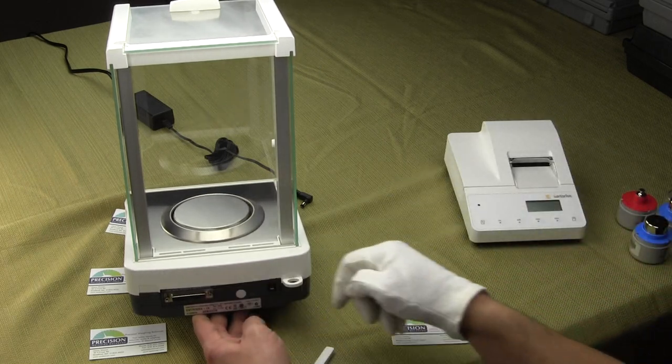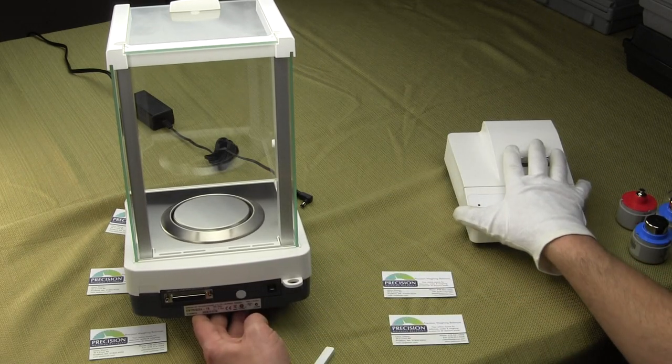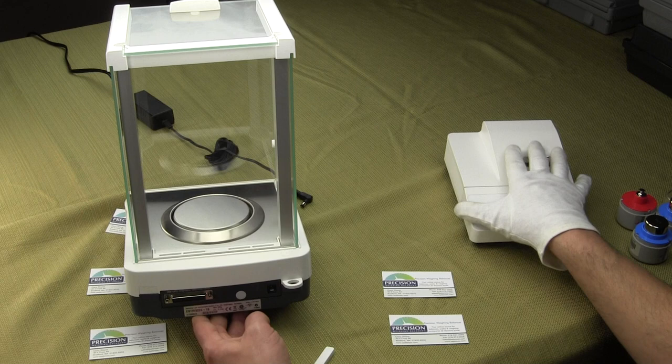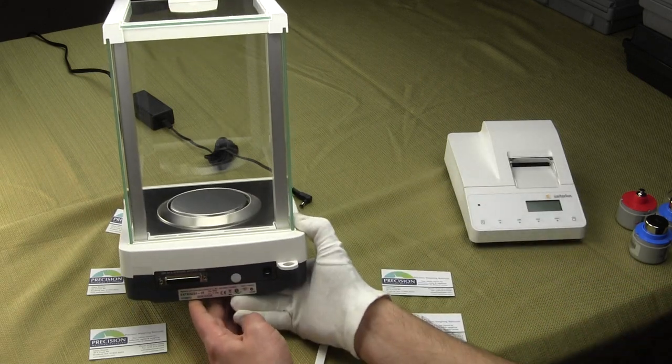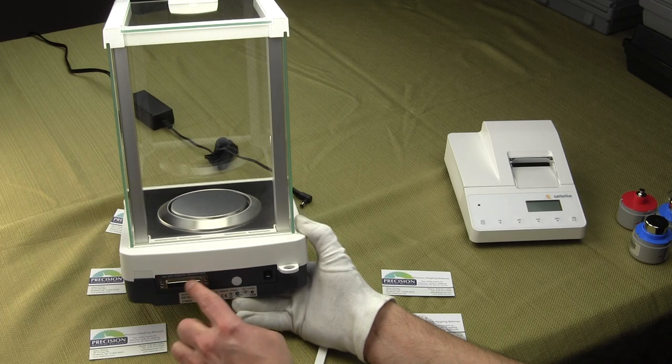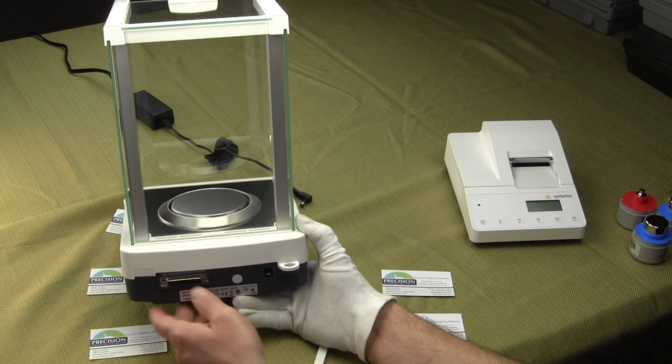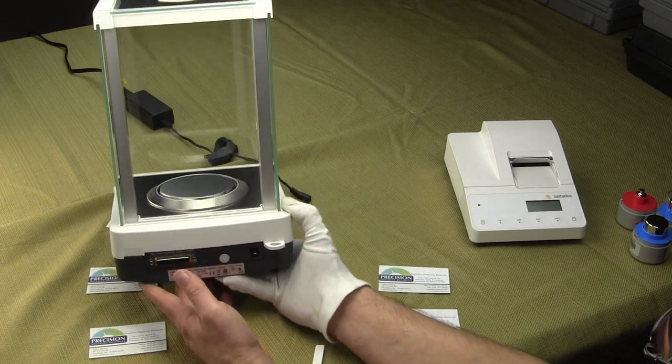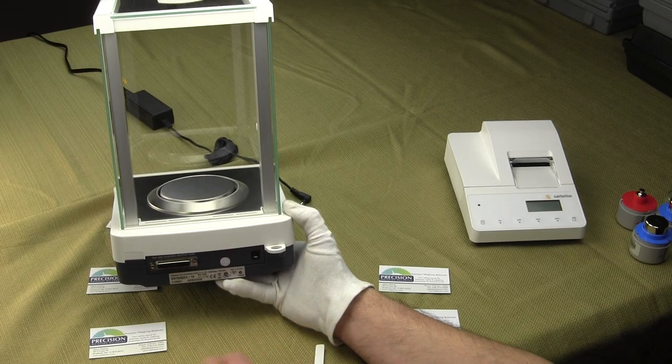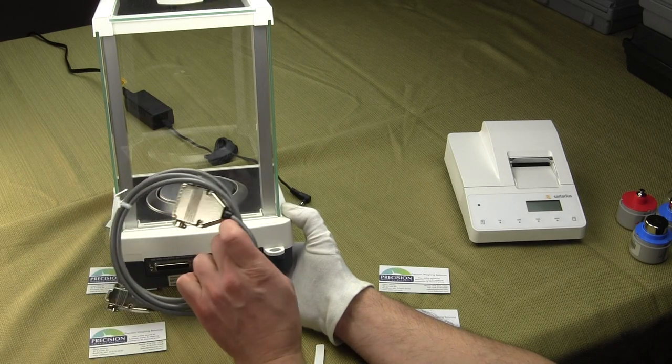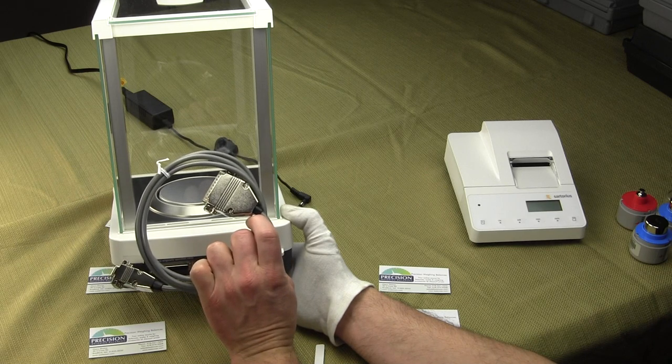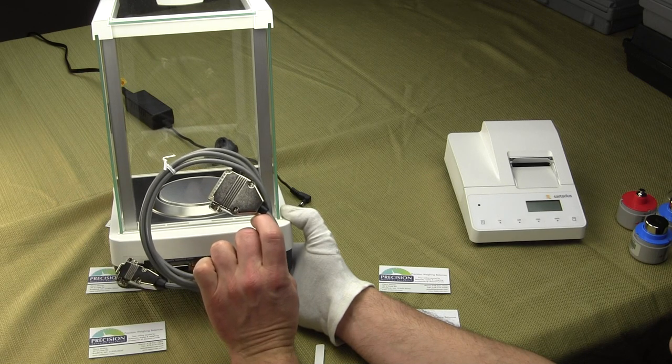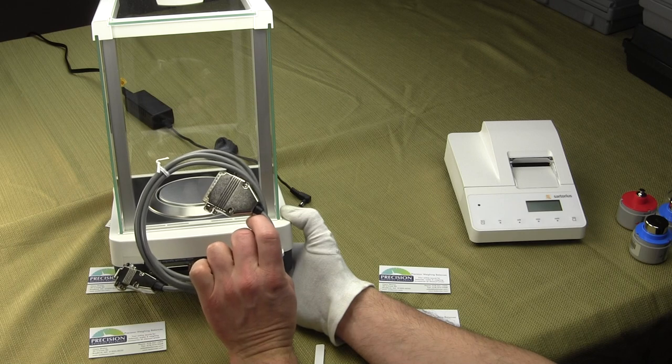If you buy the YDP-20 printer, it comes with the cable needed to go from the balance to the printer. The serial interface on the back of the balance can also be used for data acquisition. You would have to buy the optional Sartorius RS-232 cable. This is Sartorius's cable, not a standard serial cable.